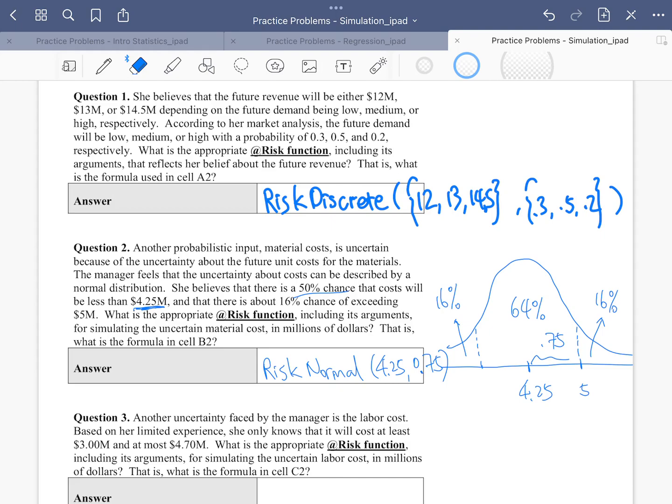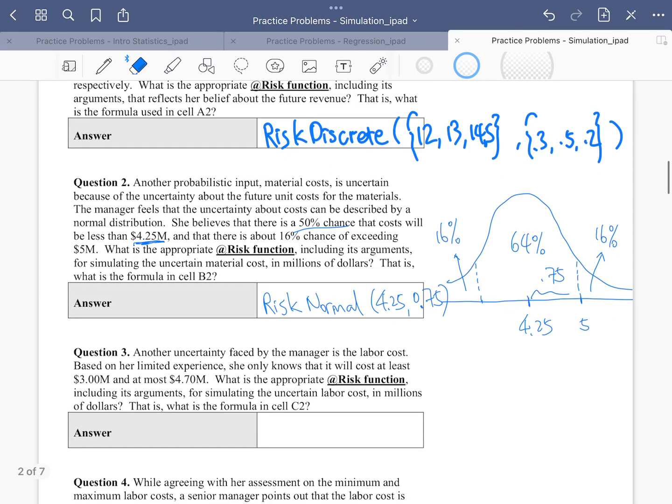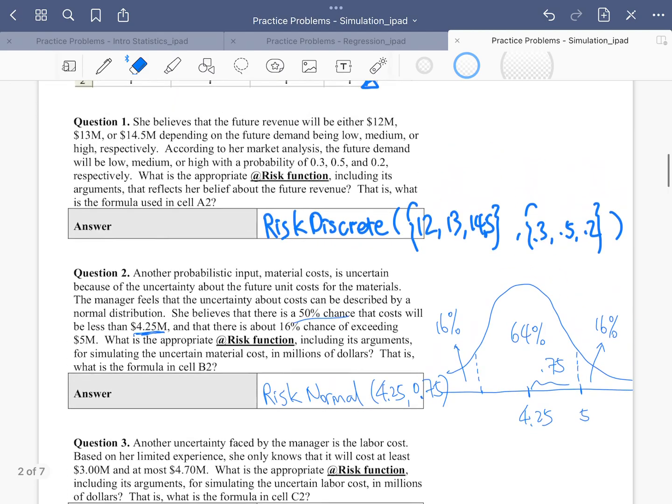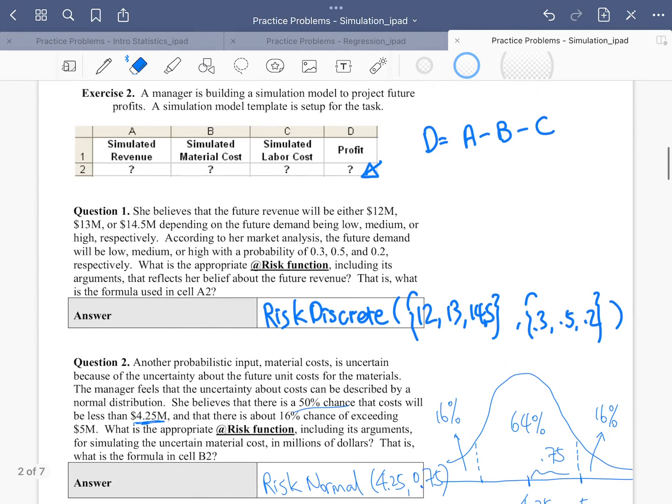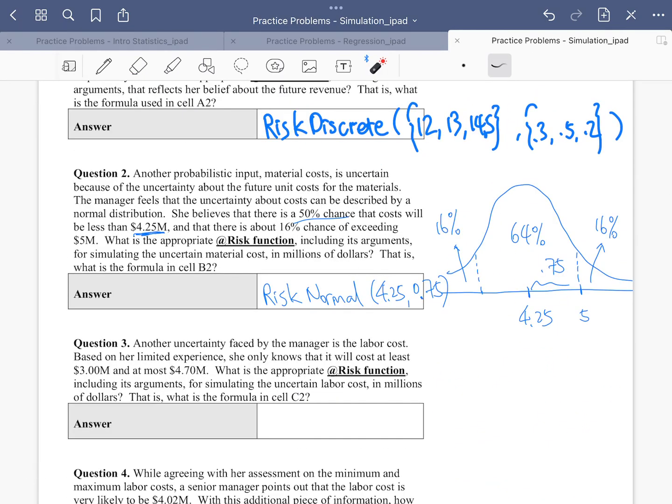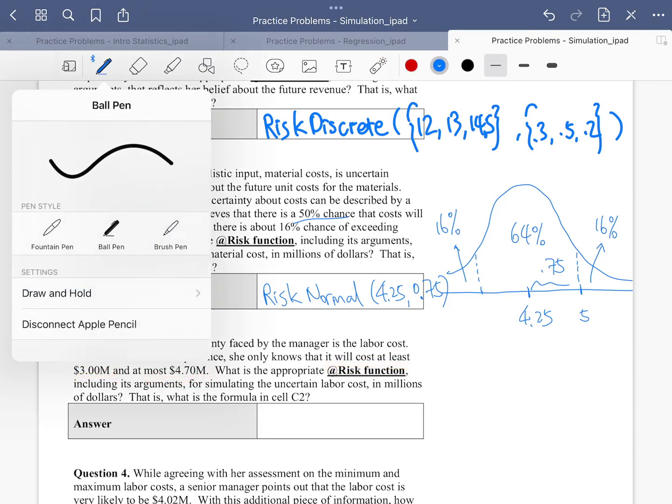Let's move on to part three. So now what we want to do is we want to figure out labor cost. So another uncertainty faced by the manager is labor cost. She knows that it will cost at least $3 million and at most $4.7 million. So that's all the information we know. We don't know a lot of information in this case.